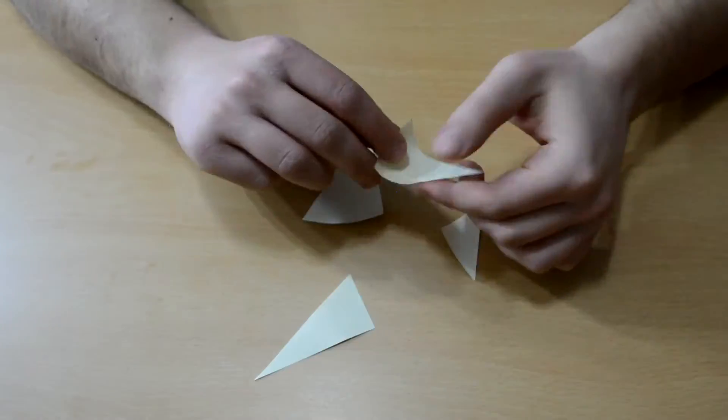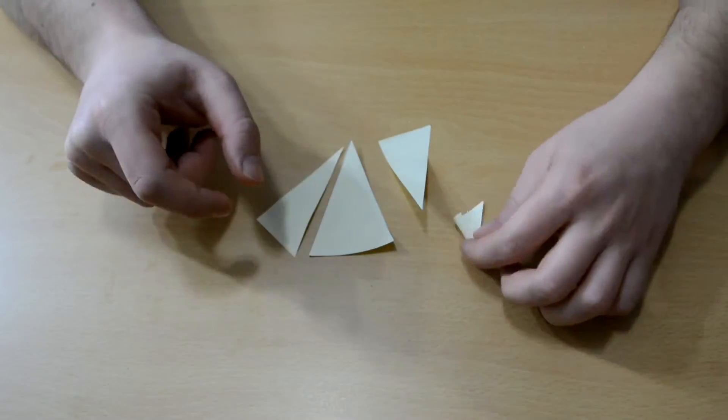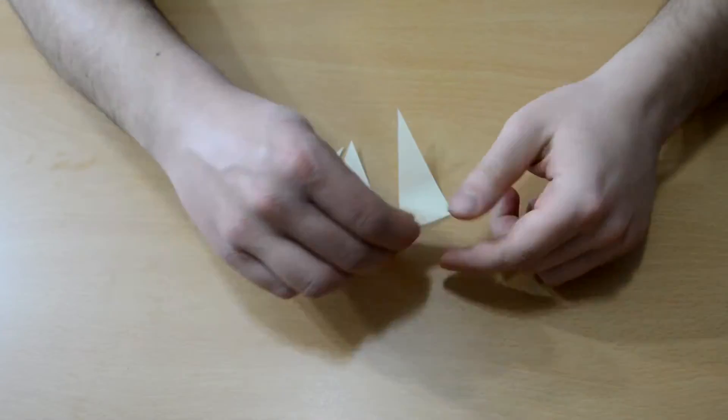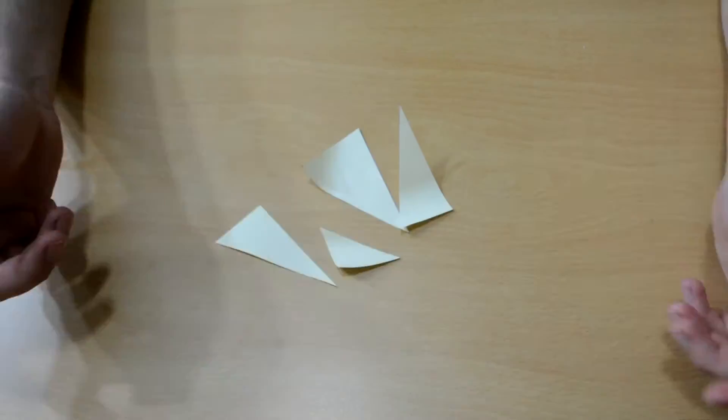Once you're done, jumble up the pieces and give them to a friend and see if they can work out how to arrange them back into a square in less than 60 seconds.